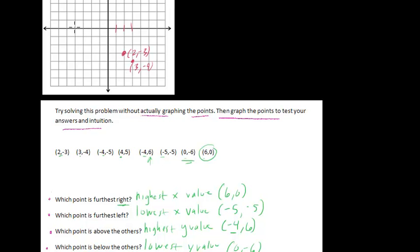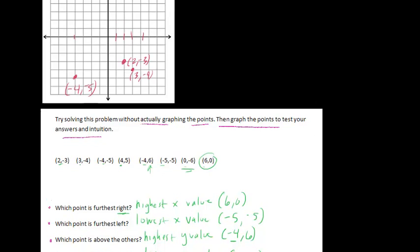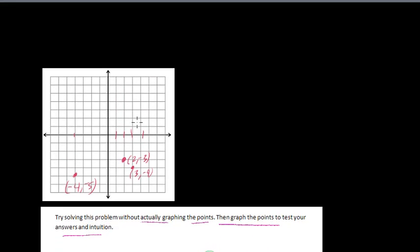And then (-4, -5). Negative 2, negative 4. And then 1, 2, 3, 4, 5 here. (-4, -5). And then (4, 5). We'll up a little bit. So that's 4 and then a 5, 1, 2, 3, 4, 5 here. So that's (4, 5).